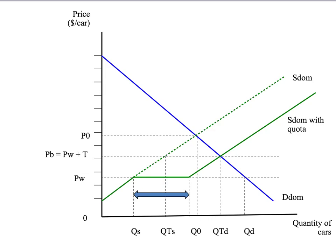Because the quota has the same effect on prices and quantities as the tariff, the quota will have exactly the same effect on consumer and producer surplus as the tariff. The quota leads to a reduction in consumer surplus given by the orange shaded area, and a rise in producer surplus given by the green shaded area. But what about the area of government revenue — the area shaded in blue — which was government revenue under the tariff. What does that area represent under a quota?